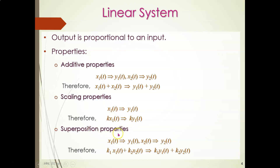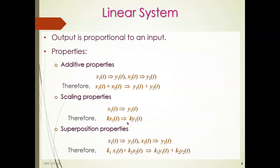For the superposition property, if x1 corresponds to y1 and x2 corresponds to y2, then combining additive and scaling properties: k1·x1(t) plus k2·x2(t) must result in k1·y1(t) plus k2·y2(t) at the output. This k can be any constant. If the system violates any one of these properties, it is said to be non-linear.